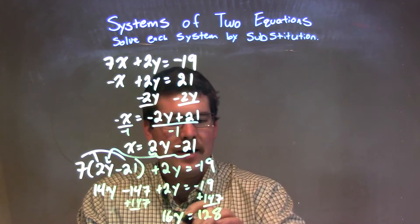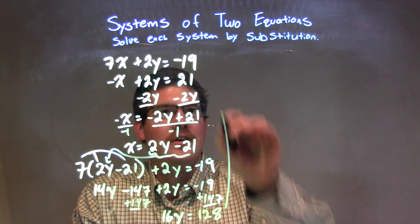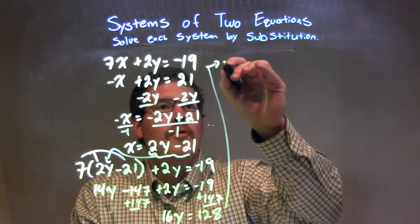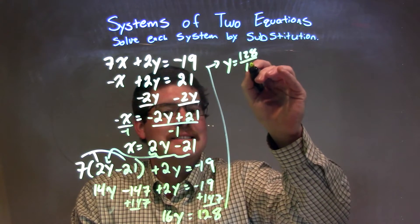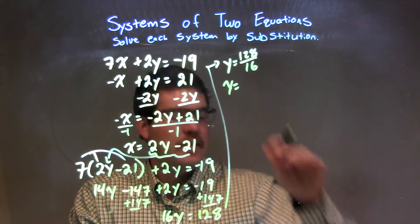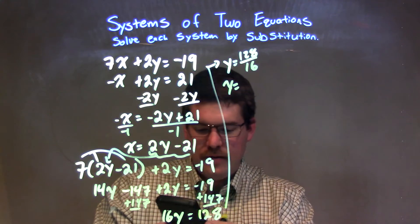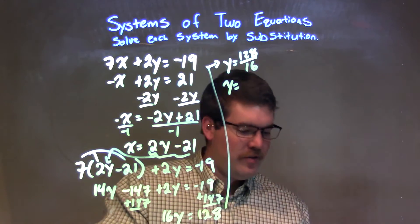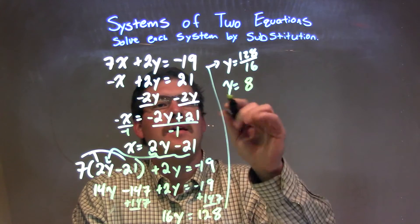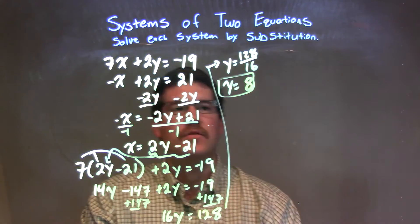For the next part, I'm going to divide both sides by 16, so let's go finish that right up here. We have y equal to 128 divided by 16, and so y is equal to, and that 128 divided by 16 is 8. So we have y is equal to 8.